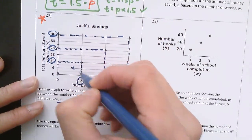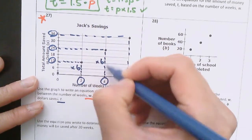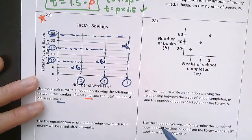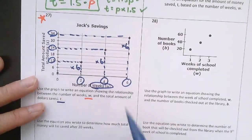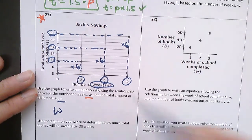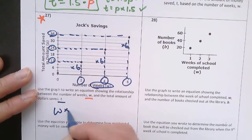Well, it's 2 times 6 gets me to 12. 4 times 6 gets me to 24. 6 times 6 gets me to 36. So whatever the number of weeks is, which is W, that's being multiplied by 6.